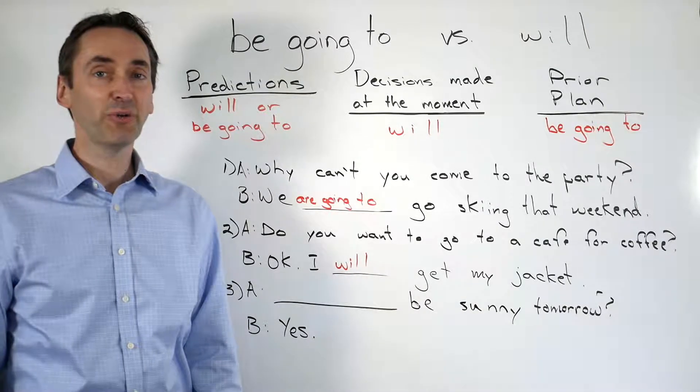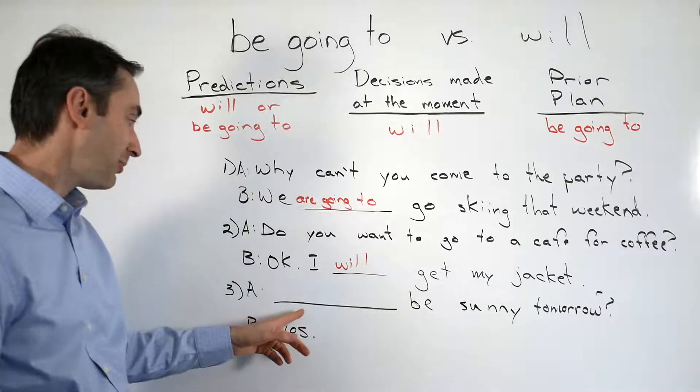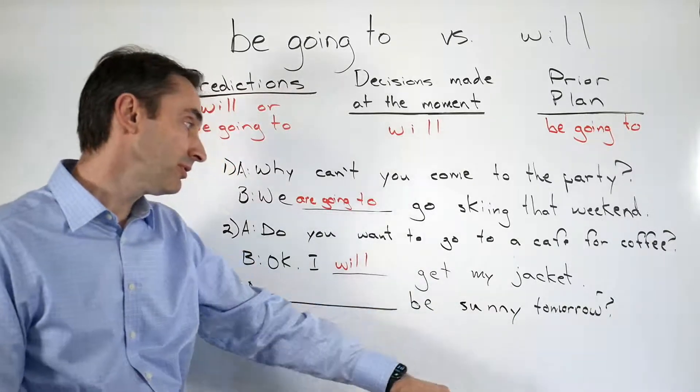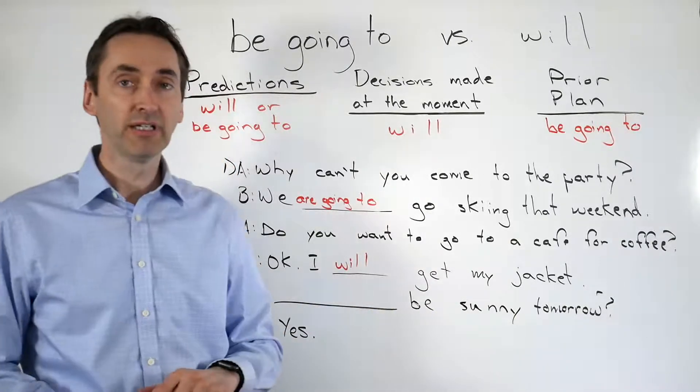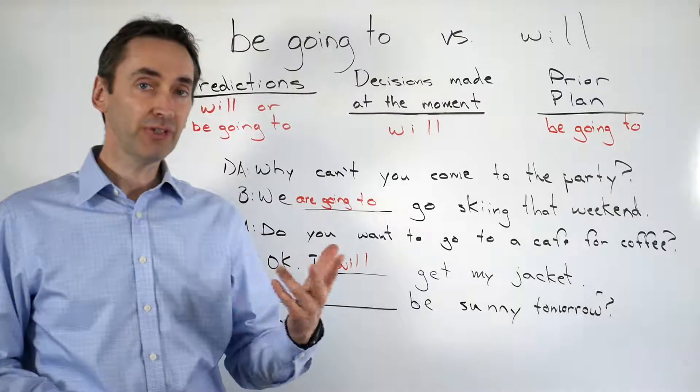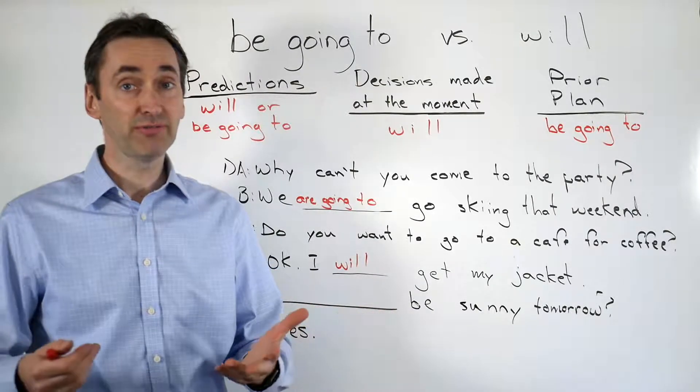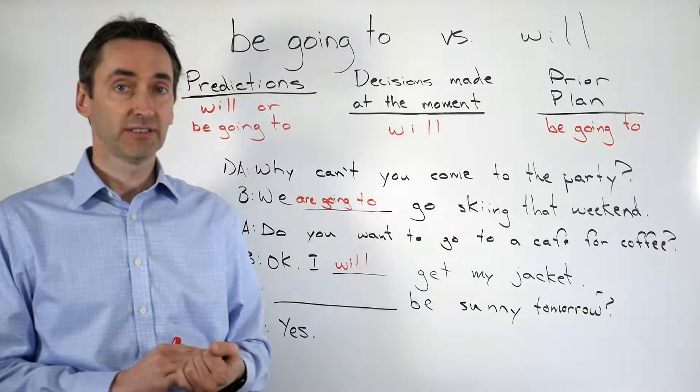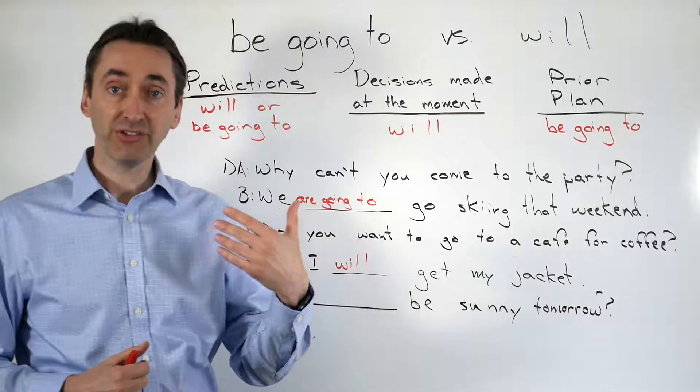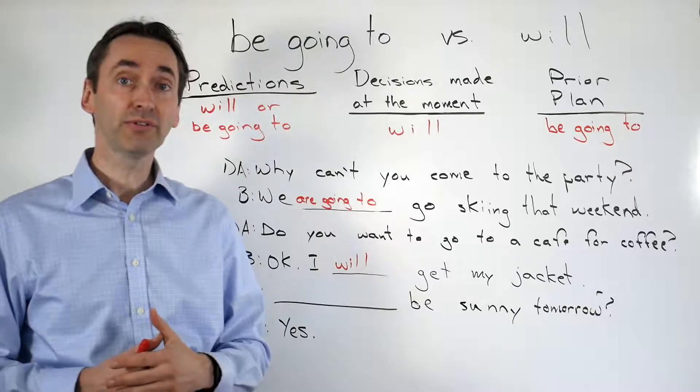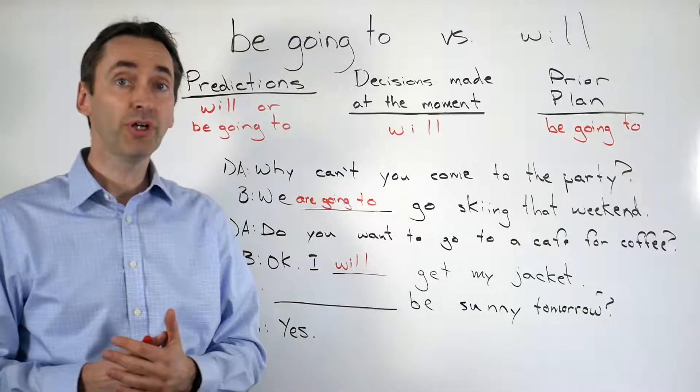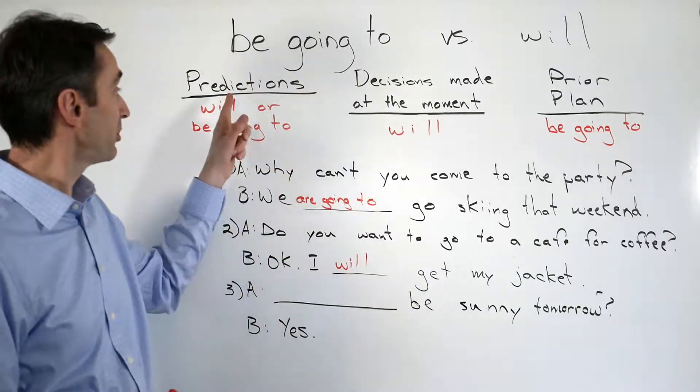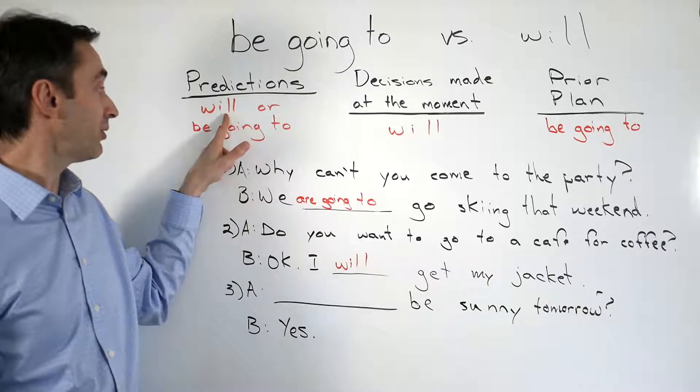Looking at question number three, something something be sunny tomorrow? Yes. Whether it will be sunny or not tomorrow is a prediction. We don't know for sure. Even if the weather forecast says it will be sunny tomorrow or it's going to be sunny tomorrow, we don't know for sure. So we know that this is a prediction. Predictions we use will or be going to.